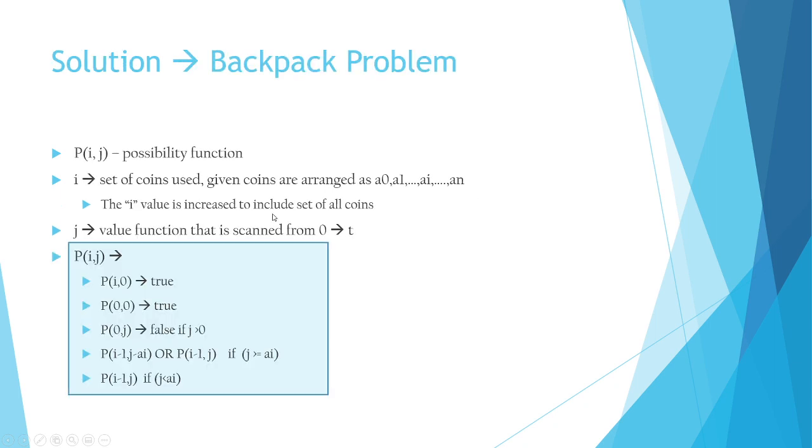So the solution is essentially very similar, and this is just a different way to package that same problem. We're going to define a possibility function P(i,j). i would be how many numbers are included if the numbers were arranged a1 to an. If a1 to an are the numbers, and you put them from one to n, then you can vary i.